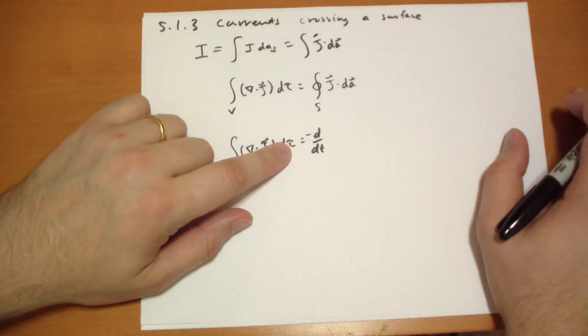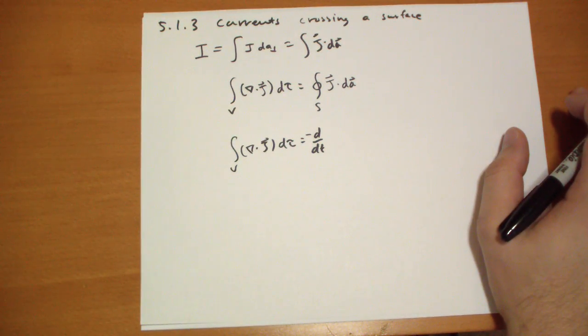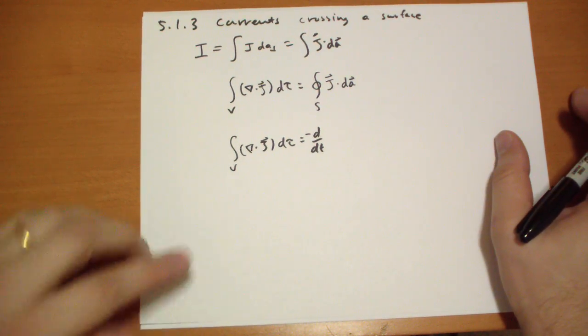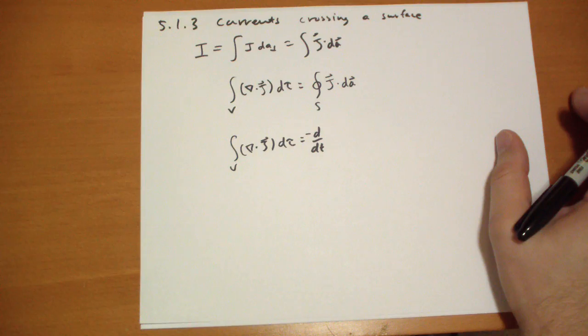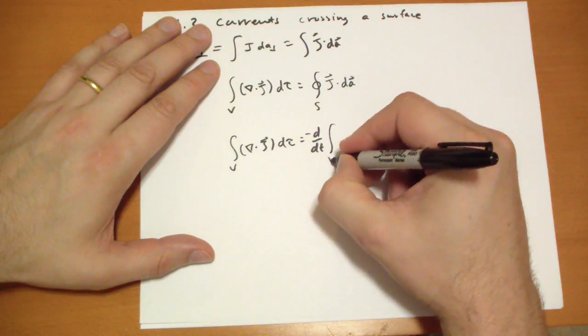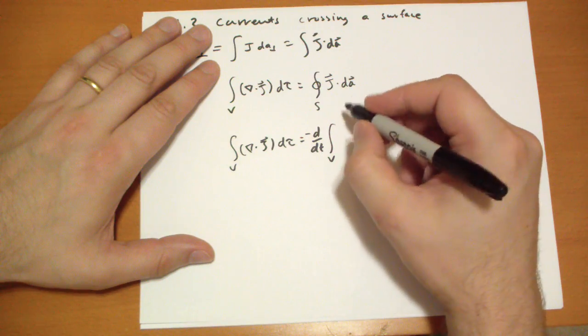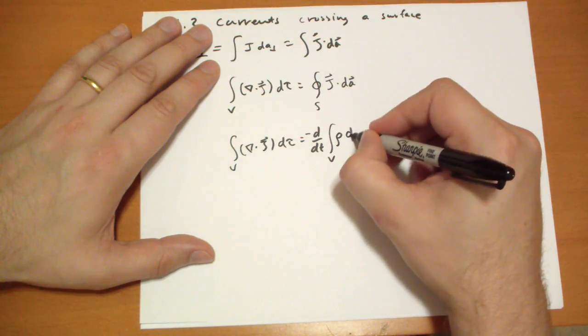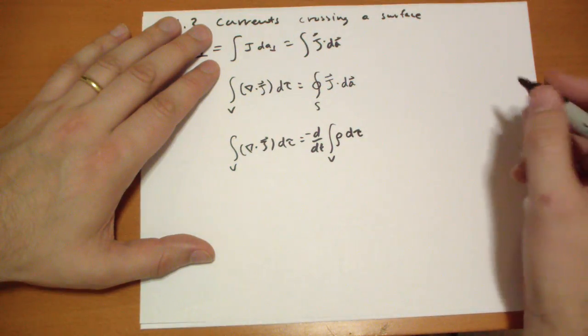So because charge is conserved, charge doesn't spontaneously appear at a place or disappear from reality. So it has to be coming into the surface. So the flow of charge through that surface is the same as the flow of the change of charge within that volume.